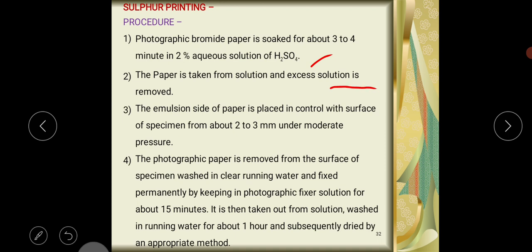The emulsion side of paper is placed in contact with the surface of the specimen from about two to three millimeters under moderate pressure. The photographic paper is removed from the surface of the specimen, washed in clear running water, and fixed.